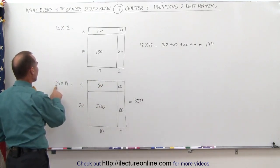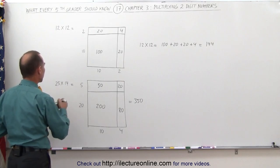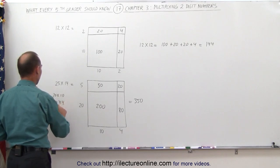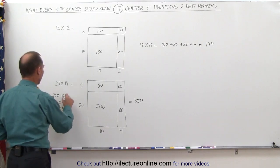So now you can say, when I see 25 times 14, really what I'm seeing is I'm seeing 20 times 10, I'm seeing 20 times 4, I'm seeing 10 times 5, and I see 5 times 4.